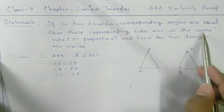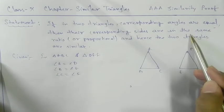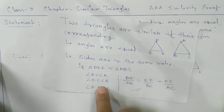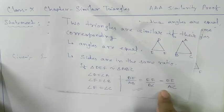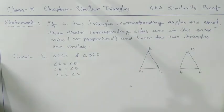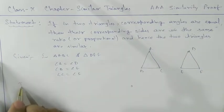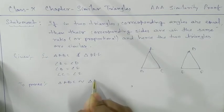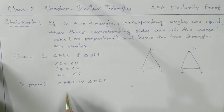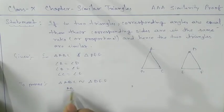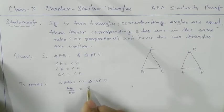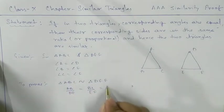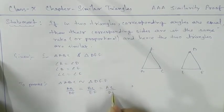Then their corresponding sides are in the same ratio. If the corresponding angles are equal, then sides are in the same ratio — and by definition that means they are similar. So they are asking us to prove that triangle ABC is similar to triangle DEF. Indirectly, we need to prove that AB/DE = BC/EF = AC/DF.